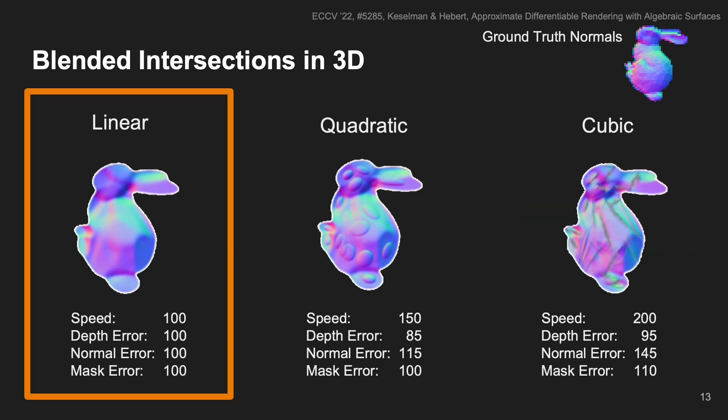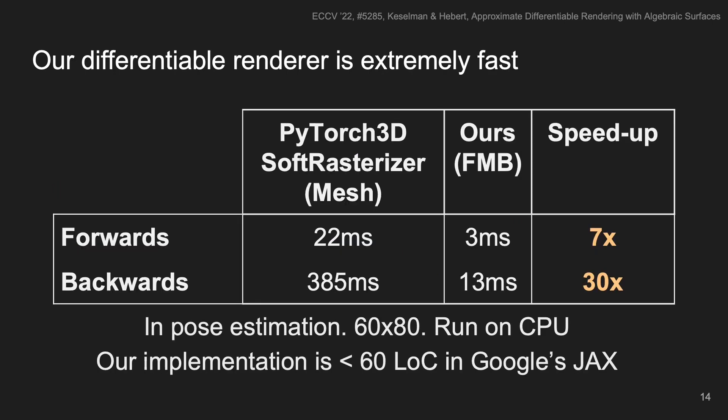In 3D, all methods are also implementable, but we prefer the linear one because of its numerical stability and speed. Overall, this renderer ends up being 7 times faster in forward passes and 30 times faster in backward passes compared to an implementation of a differentiable mesh renderer in PyTorch3D.